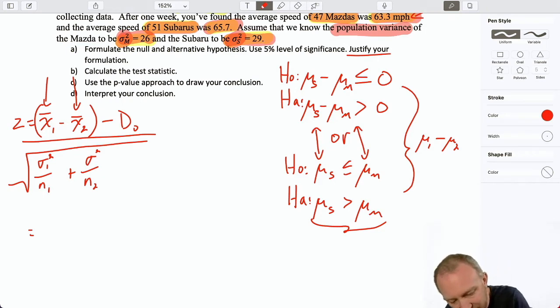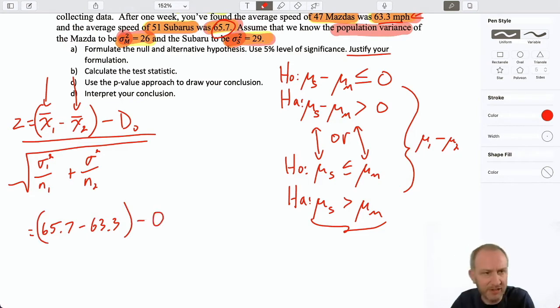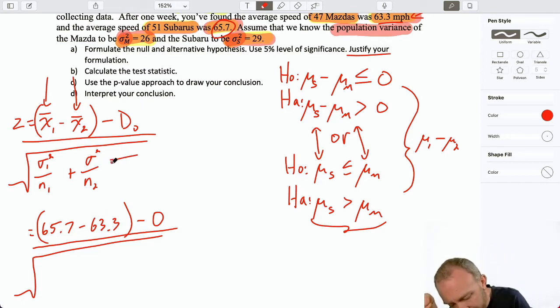So, when I fill in this formula, the first part is generally straightforward. I have to make sure that the way I enter the values into my formula are consistent with how I have defined my terms. So, here I can see Subaru is my population one and Mazda is my population two because these differences are always one minus two. So, I have to make sure that I'm consistent in the use of those definitions throughout the problem. So, this is going to be the mean of the Subaru, 65.7 minus that Mazda. Our hypothesized value, of course, is zero.